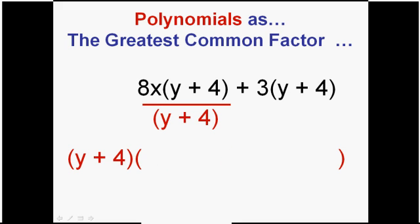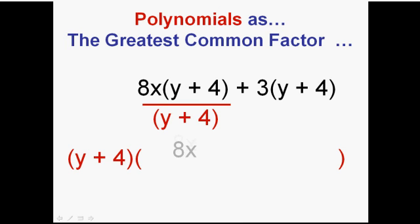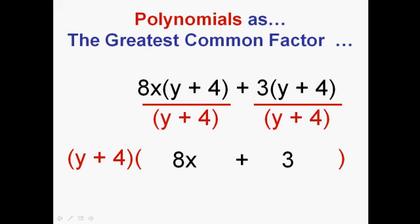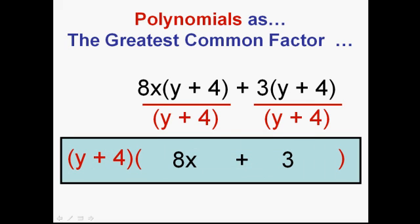And then how do you decide what goes inside parentheses? Divide each term by that greatest common factor. Dividing this by y plus 4 we get of course 8x because the y plus 4s cancel. And dividing the second term by y plus 4 again they cancel, and I get plus 3. And I'm hoping you can see that I can actually take out as a greatest common factor a polynomial or a set of parentheses. High five, got it.